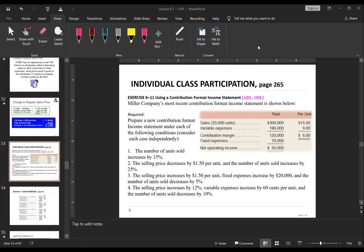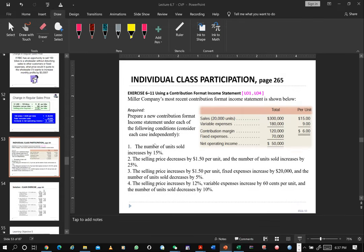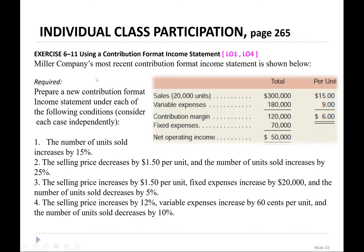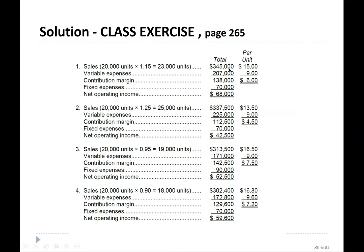Okay guys, welcome back from the breakout room activity. I have received your files and I've also pasted a solution here, so please match your answers. First: net operating income is 68,000. Second: net operating income is 42,500. Third: 52,500. Fourth: 459,600. You can compare your answers from this solution as well.